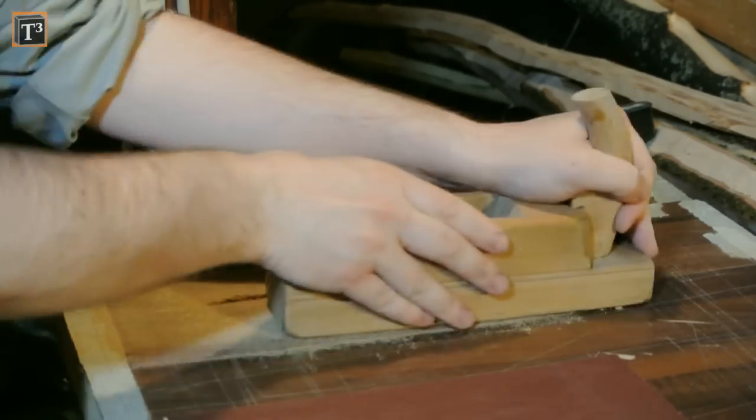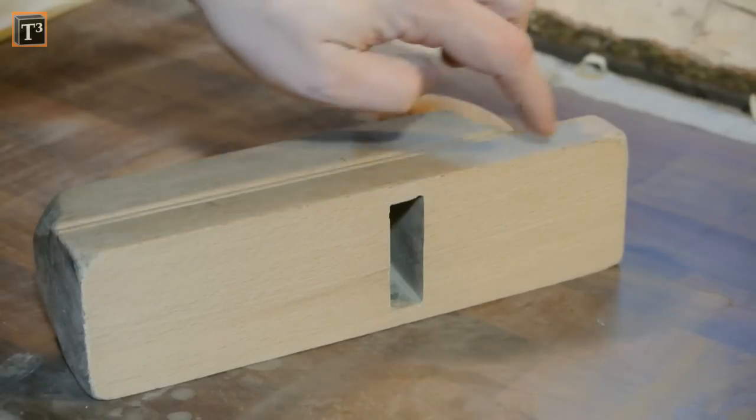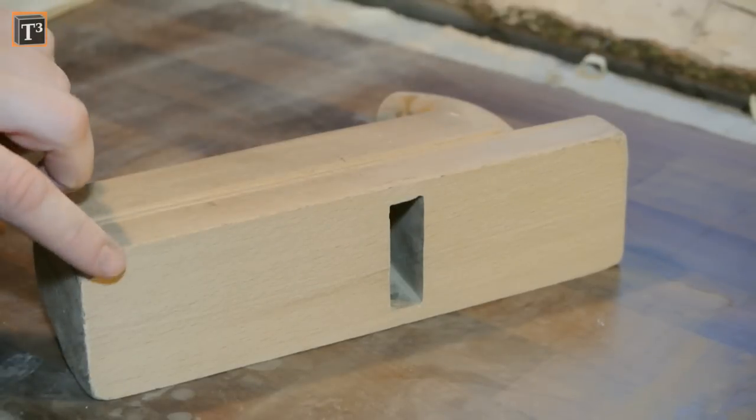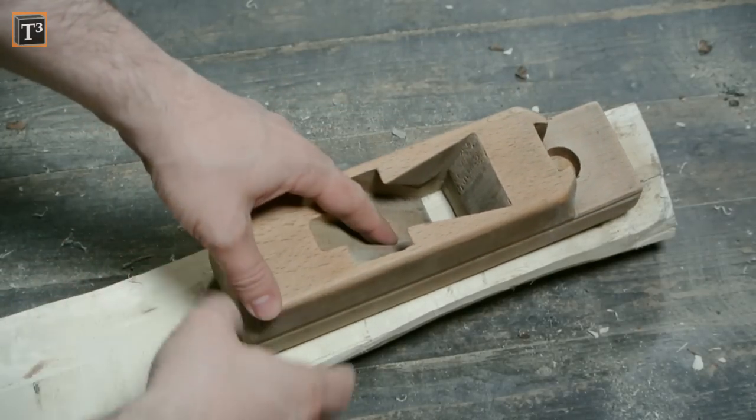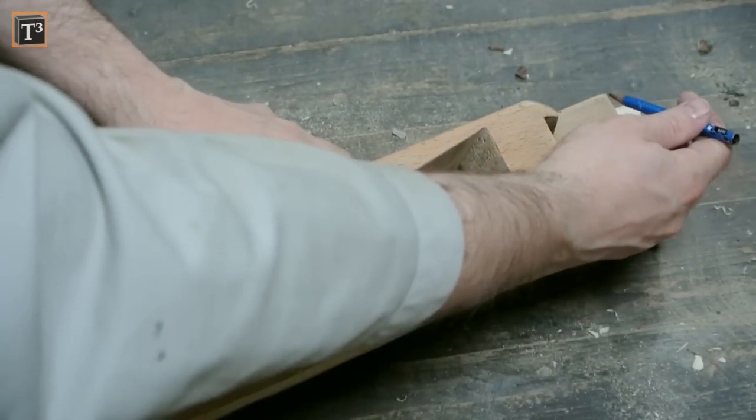Good wood for a plane sole is hornbeam. If you have the choice have the annular rings perpendicular to the sole. It will make it sturdier. I transfer the rough shape of the plane and cut it out.